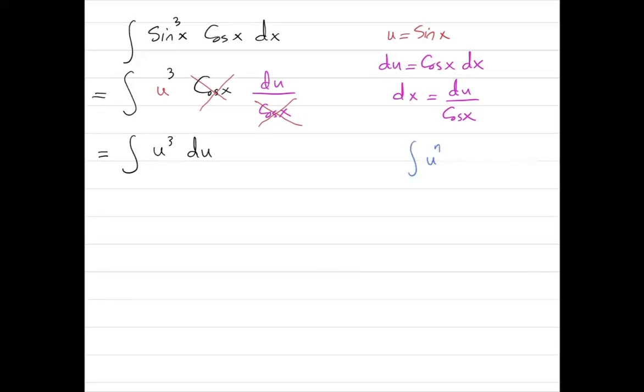Whenever you have the integral of u to power n du, this is u to n plus 1 divided by n plus 1 plus c, which is a familiar formula. If you apply it here, this becomes 1 fourth u to power 4 plus c.